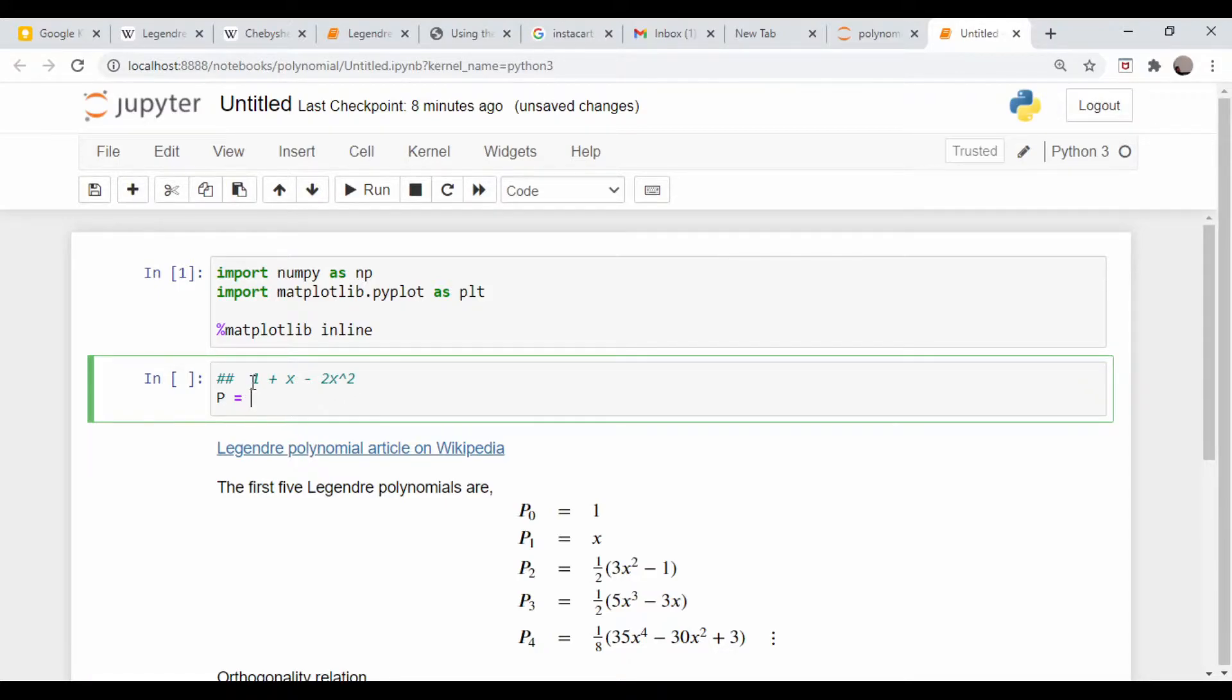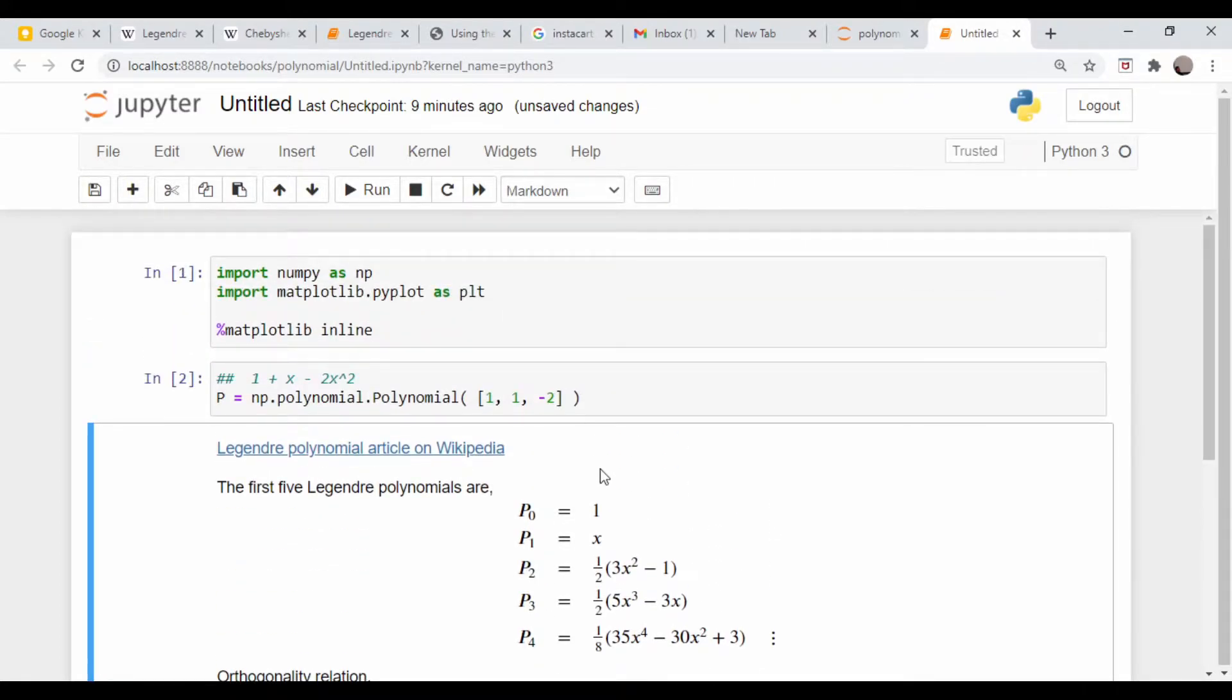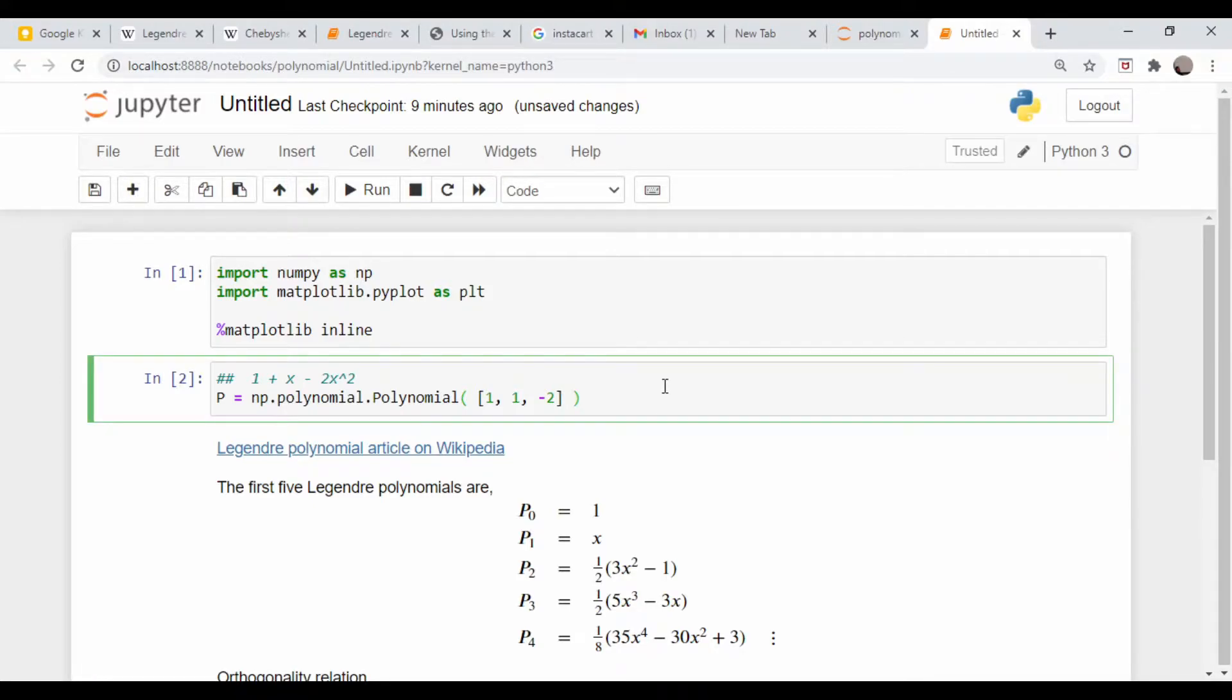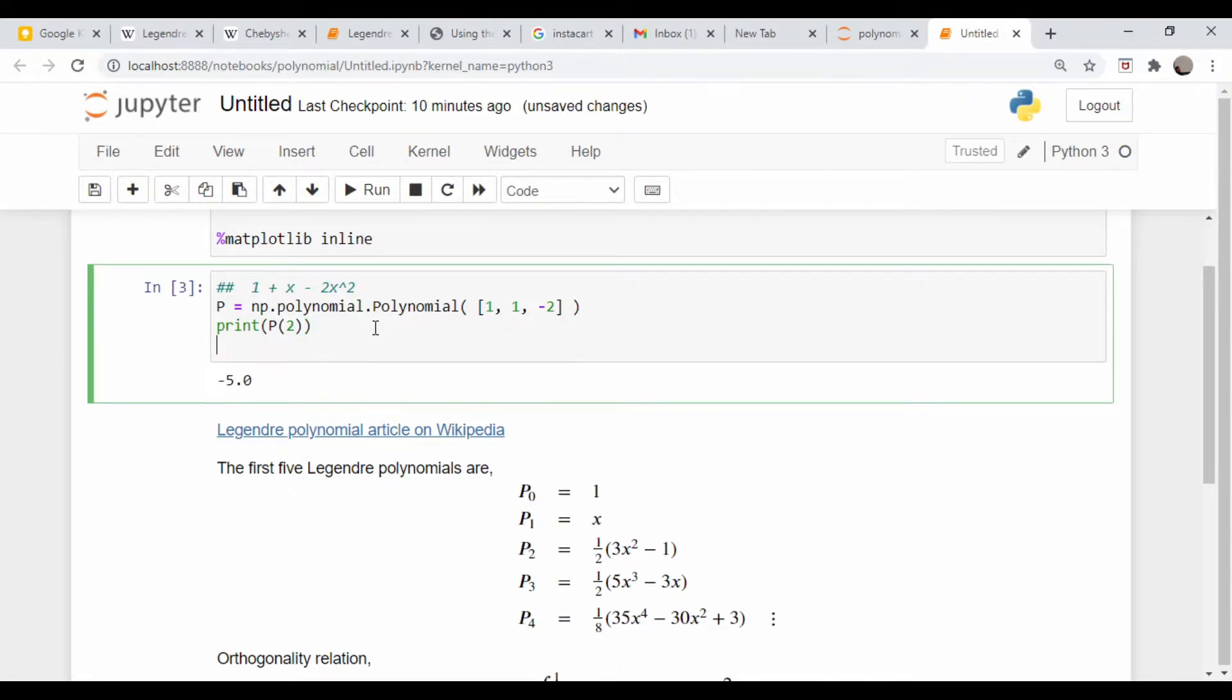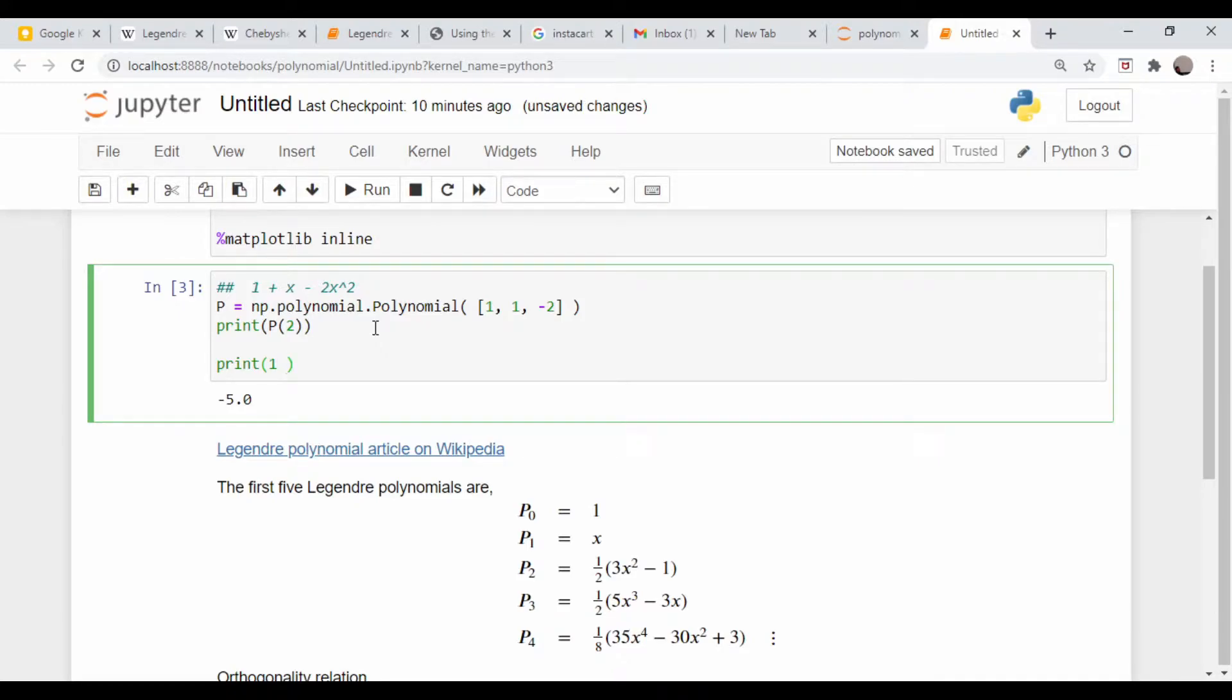Let me just demonstrate what I mean by that. For example, if we want this polynomial here 1 plus x minus 2x squared, we could just create np.poly.polynomial and enter an array of our coefficients in ascending order: 1, 1, minus 2. That just defines this polynomial. If I want to evaluate this at x equals 2, I could say print p at 2, it is minus 5.